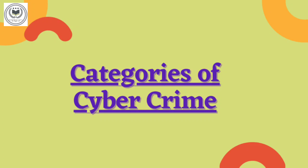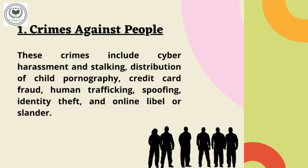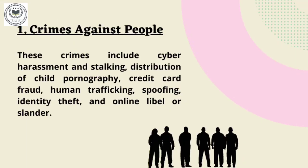Next, we have categories of cybercrime. In this, we have three types: crime against people, property, and government. First, we have crime against people, and the examples are cyber harassment, stalking, distribution of child pornography, credit card frauds, human trafficking, spoofing, identity theft, and online libel or slander.